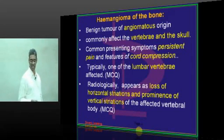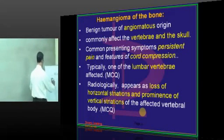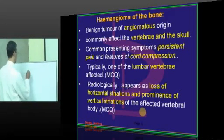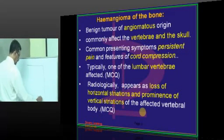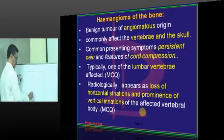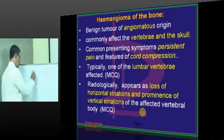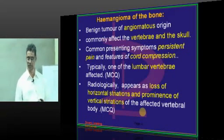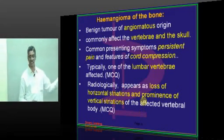Typically, one of the lumbar vertebrae is the common area. Radiologically, it has a loss of horizontal striations. In a normal vertebra, both horizontal and vertical striations are present. In hemangioma, the horizontal striations become obscured and you see predominantly vertical striations — that is the characteristic radiological feature.